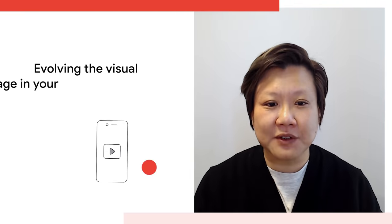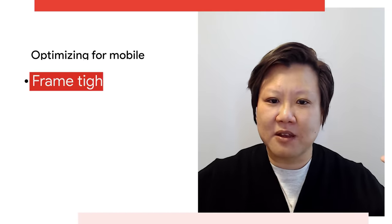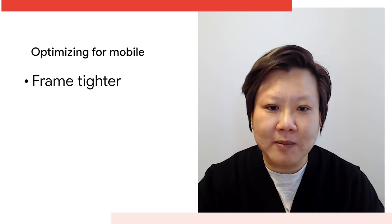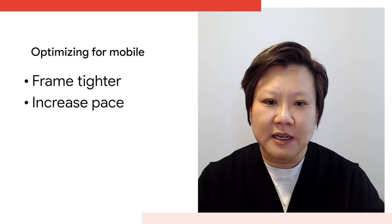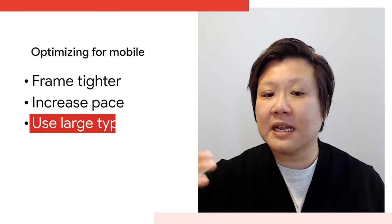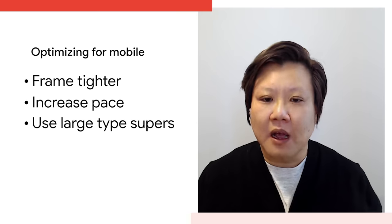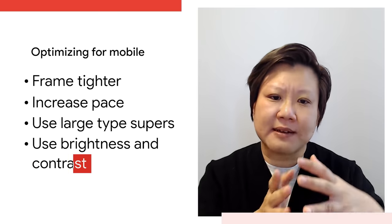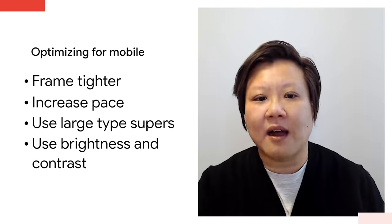It's not just the story structures that have changed when we build ads for YouTube. Evolving the visual language in your ads for mobile can boost your ad's impact. It's as simple as framing your shots much tighter so you're focusing and directing attention to the right places and moments, increasing the pace of your film to make full use of the time you have to communicate, and using large type supers so people can actually read and understand what you're trying to convey. Also, people are usually watching at around 50% dimness, so ensure there's enough brightness and contrast between the colours of your ads so they're easily seen on screen.